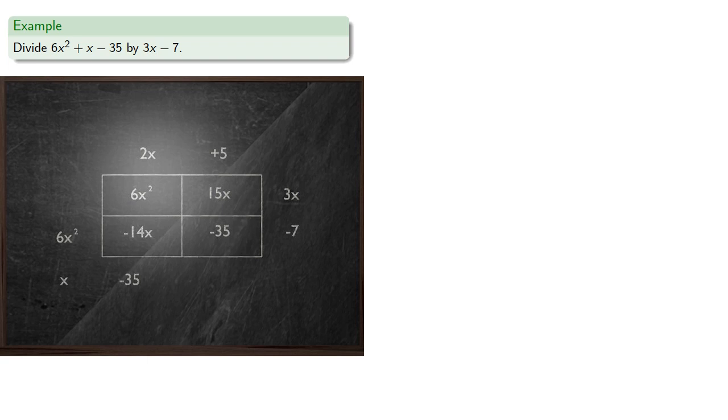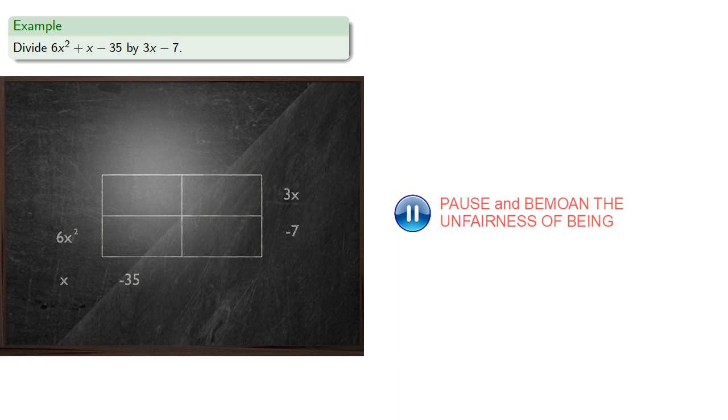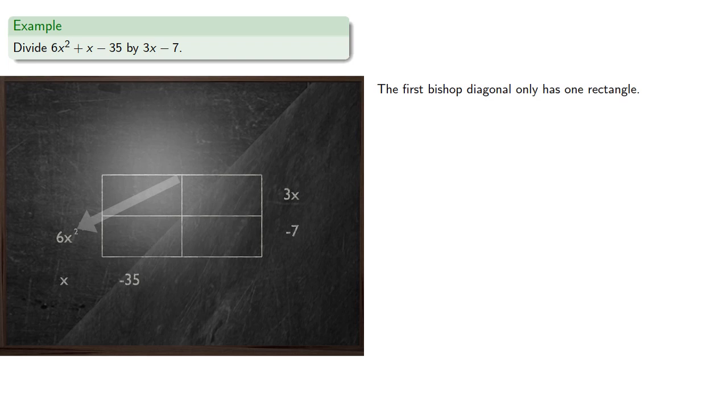What's important here is that we can reverse the process. Suppose we didn't know the areas of these smaller rectangles and we didn't know the width of the big rectangle. If we still know the area, we'll be able to find the length. So let's consider that. This first bishop diagonal, which must add to 6x squared, only has one rectangle, so this rectangle must have area 6x squared.